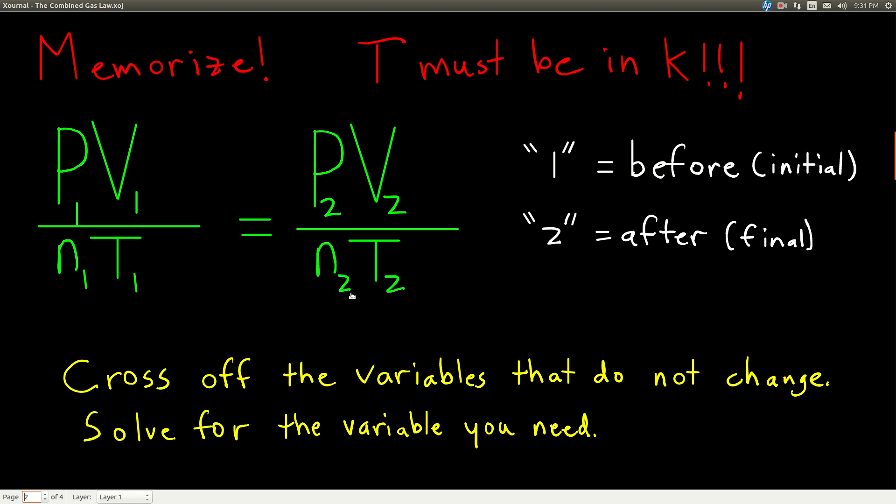Now, one of the different things about the combined gas law is that you don't have to convert the pressures to atmospheres or the volumes to liters. As long as you have the same units on both sides, they can be millimeters of mercury on both sides for the pressure and milliliters on both sides for the volume. That's fine. And N is always going to be in moles, of course, but, and this is really important because it's one of the most common mistakes, the temperature always has to be in Kelvin. You will get the wrong answer if you do not convert the temperature to Kelvin before plugging it in.